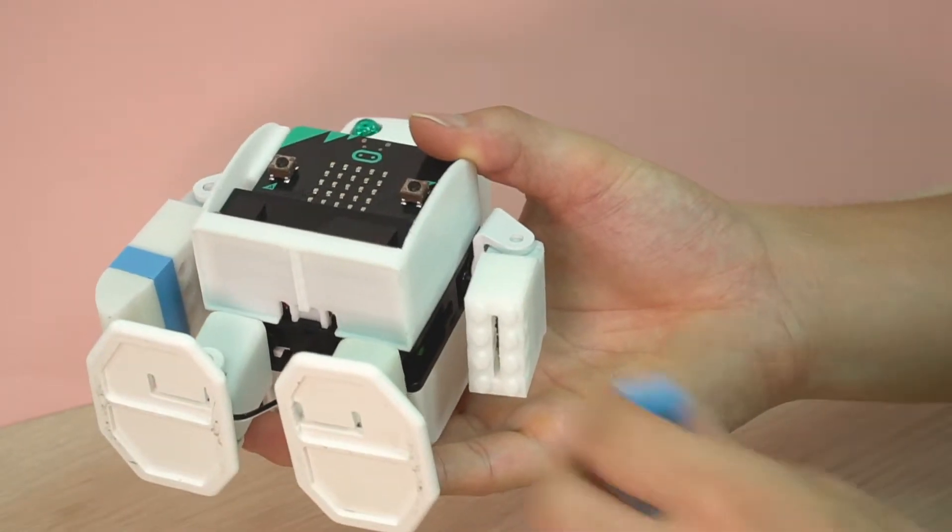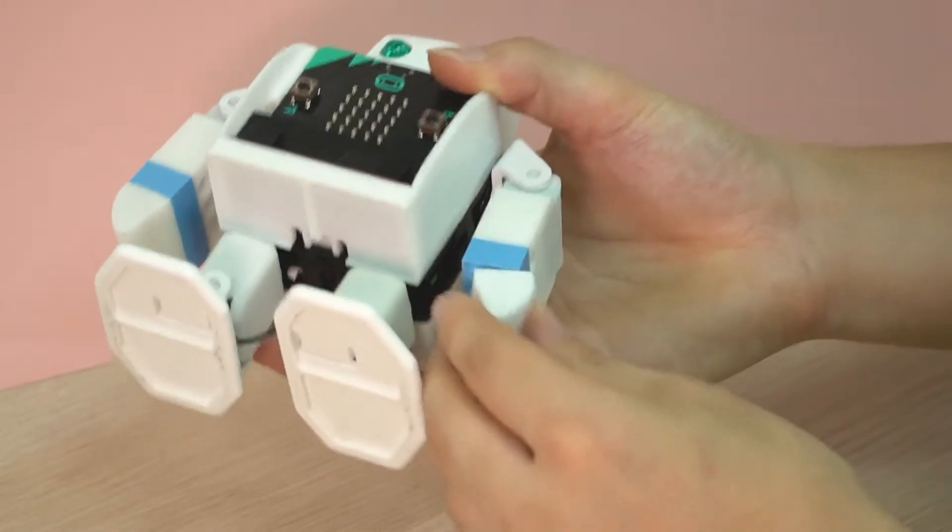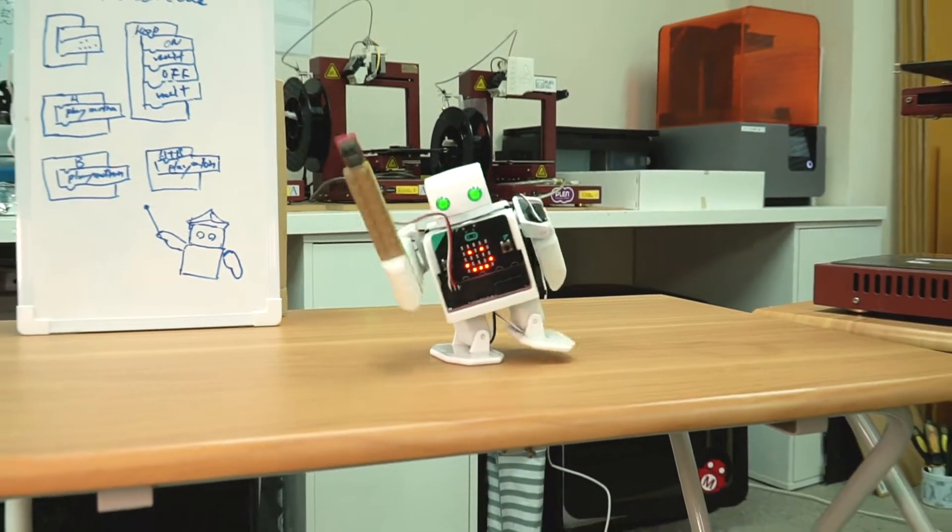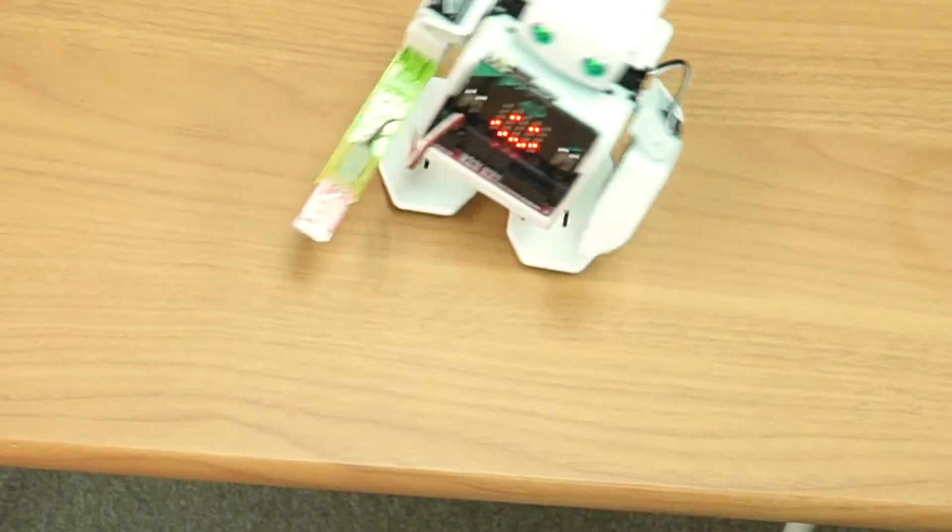You can change and replace different blocks in the PlenBit's hands to make new shapes. It's easy to attach a sensor to the hand of PlenBit for more spatial awareness.